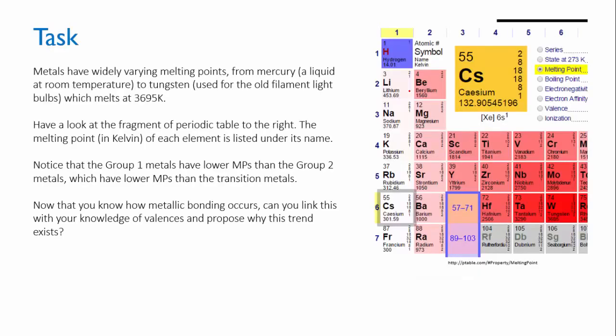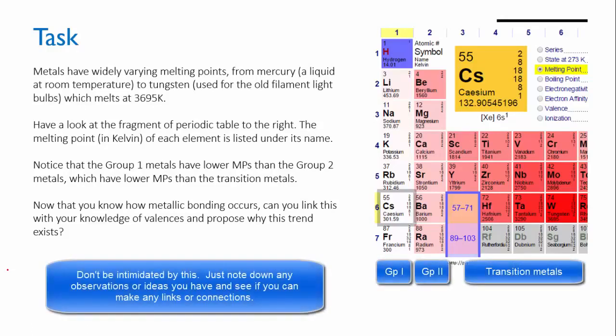So my task for you today is a thinking one. I've copied a small section of the periodic table here which shows the melting points of some of the elements. You'll see under the name of each element is its melting point in degrees Kelvin, and what I'd like you to look at are the group 1 and group 2 metals.